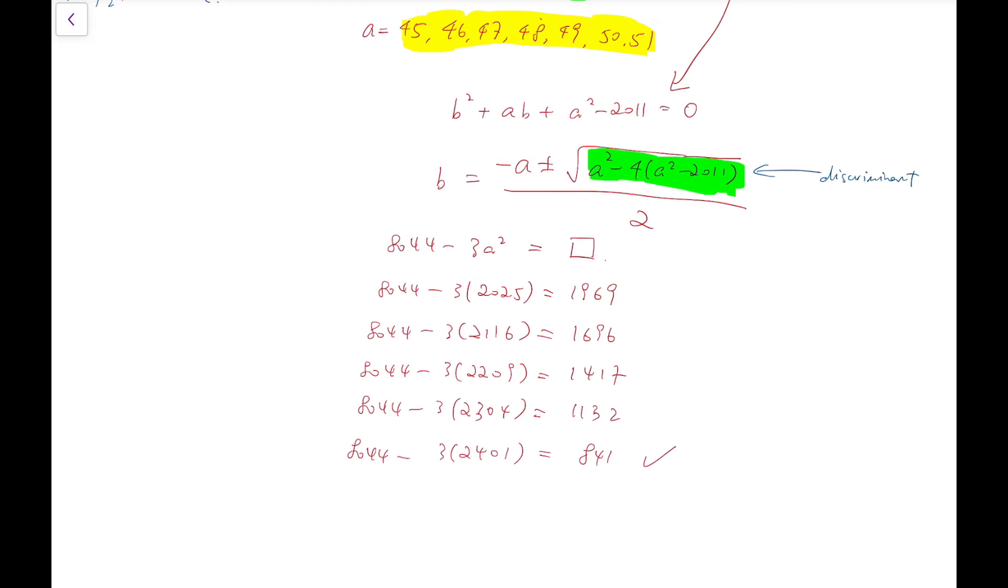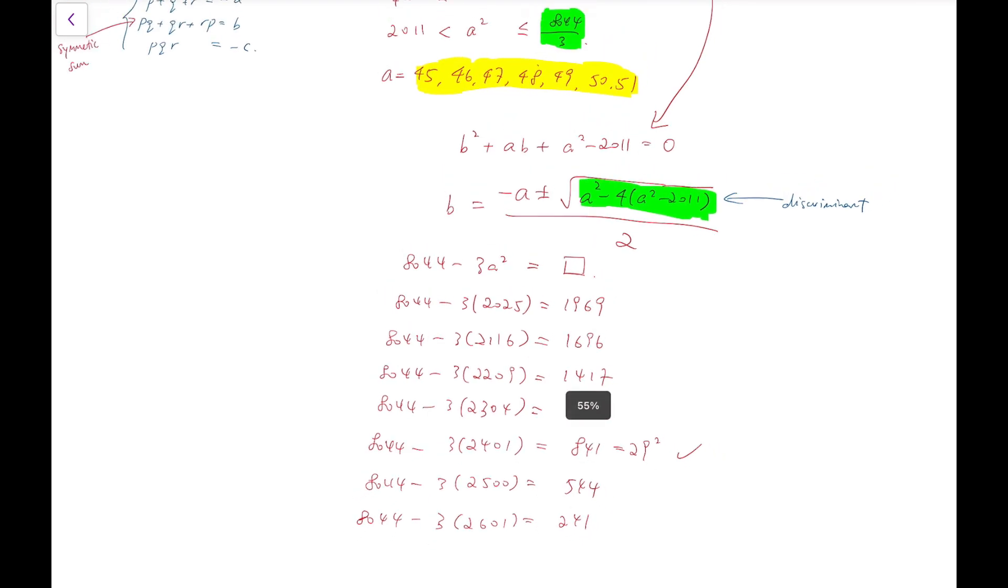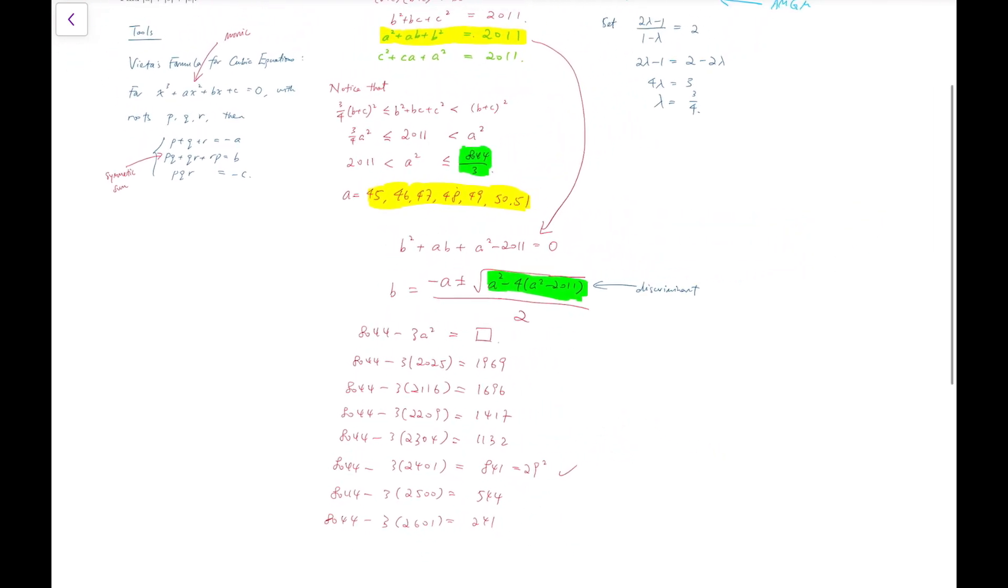The next square is 2401, and the difference this time is 841, bingo! It's a square, because it's 29 squared. In the last two squares, 2500 and 2601 respectively, and the differences are 544 and 241, both not a square. So that leaves only one solution for a, which is that a is equal to 49.